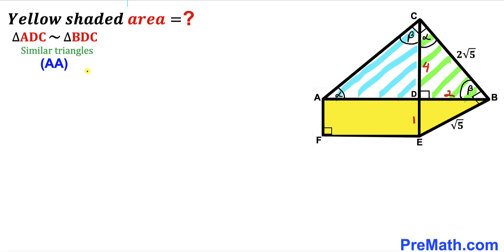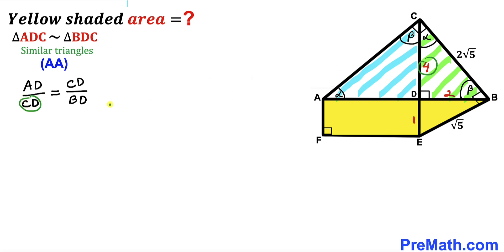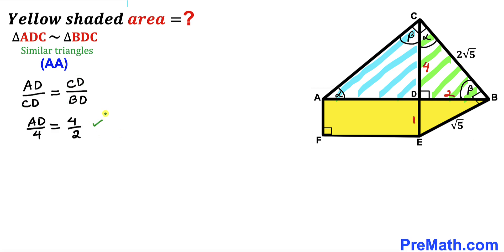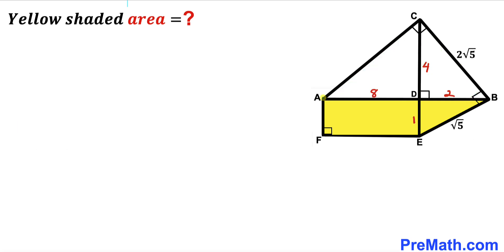Since triangles ADC and BDC are similar, we have the proportion: AD divided by CD equals CD divided by BD. Substituting the known values — CD is 4 and BD is 2 — we get AD divided by 4 equals 4 divided by 2. Multiplying both sides by 4, AD equals 8 units.